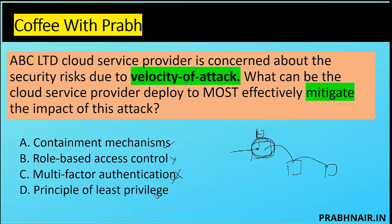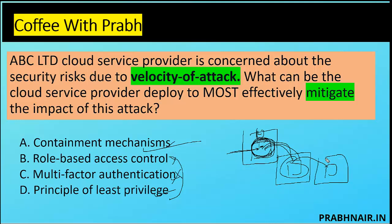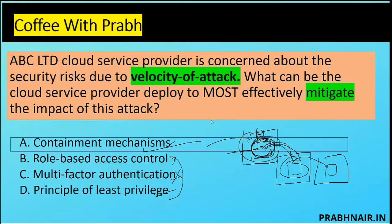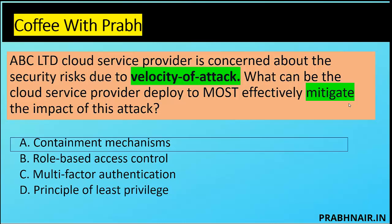Option D is principle of least privilege — even if an attacker exploits one machine using current user privileges, they can attempt lateral movement to other systems, so least privilege alone is not fully effective. However, if you use all three together — containment mechanism, micro-segmentation via SDN — like a zero-trust model, an attack is limited to that segment only. The most effective answer is option A: containment mechanism, which can be implemented in any form.